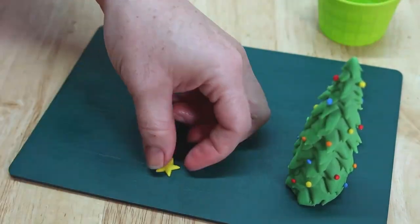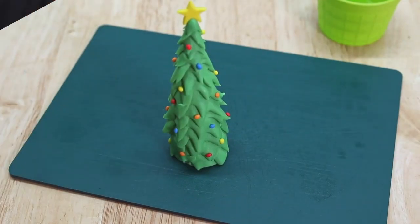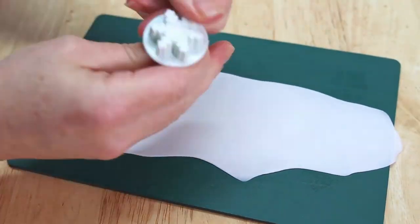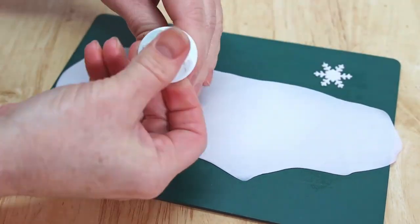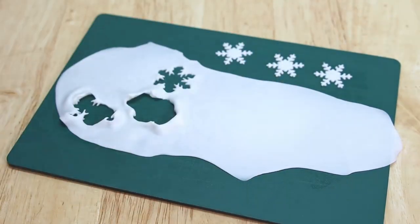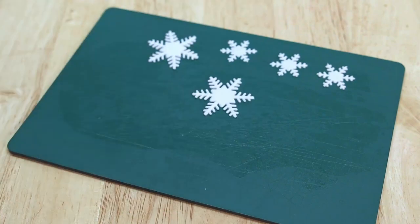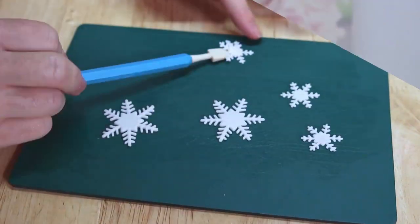And there we have it, a quick and simple Christmas tree. And now we're just going to set that off to the side to dry while we work on some snowflakes for the sides of our cake. And these are actually going to be really simple because I have these really handy little snowflake cutters. And as long as you roll out your fondant nice and thin and let it dry for a few minutes before you cut them, they come out beautifully.